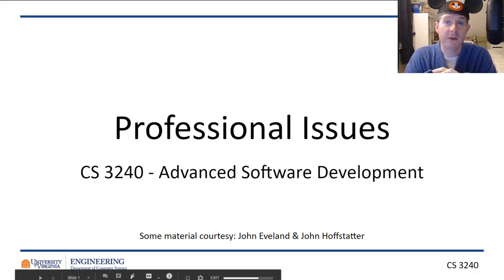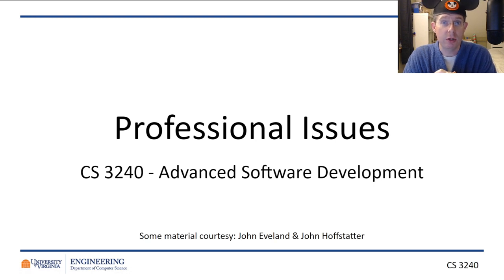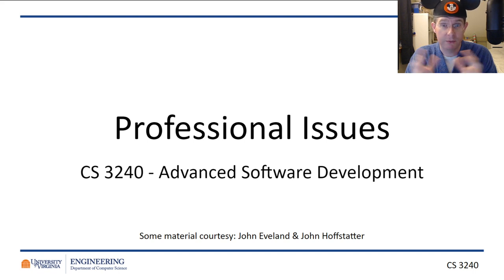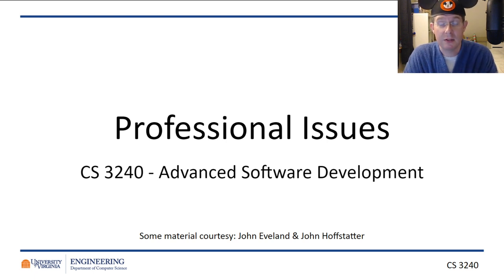The sixth and final unit for this semester is professional issues. We did a unit on each of the five phases: requirements, design, implementation, testing, and maintenance. And that leaves us with professional issues. Many of you have seen that CS 2190 has been removed from our course curriculum for the BS majors, and part of that is we're trying to move some of that material here into CS 3240 where it kind of makes sense — what does it mean to be a professional software developer?